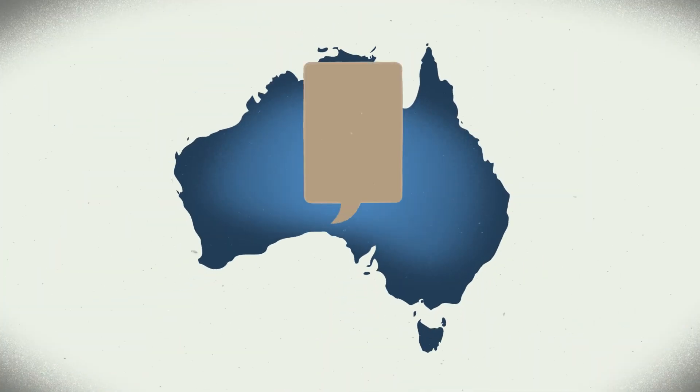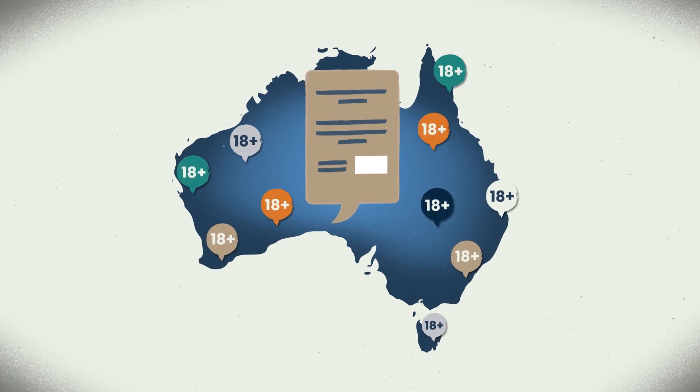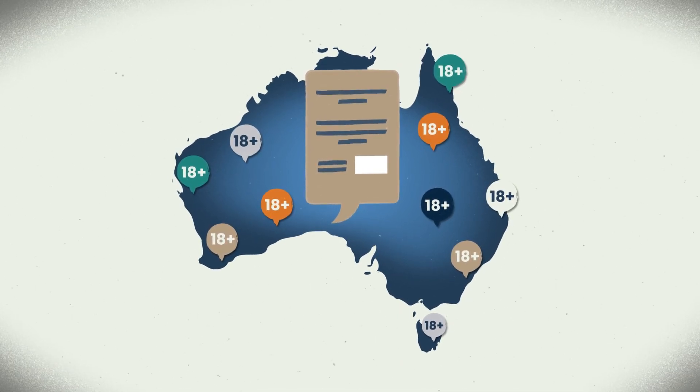Just like a regular federal election, voting in a referendum is compulsory for all eligible Australian citizens aged 18 years and over.